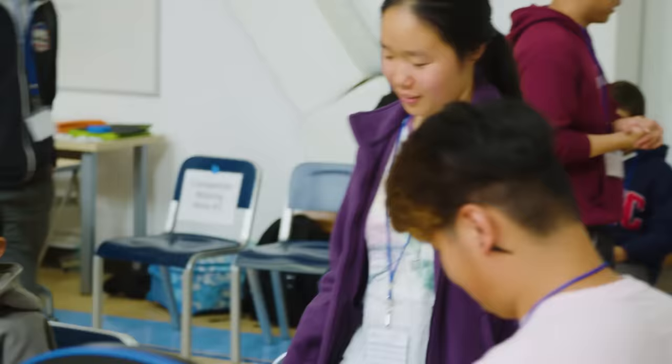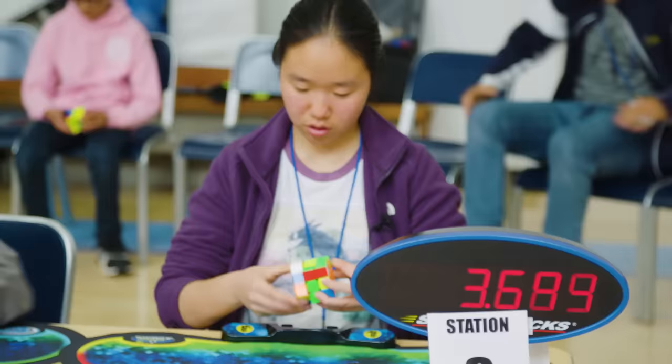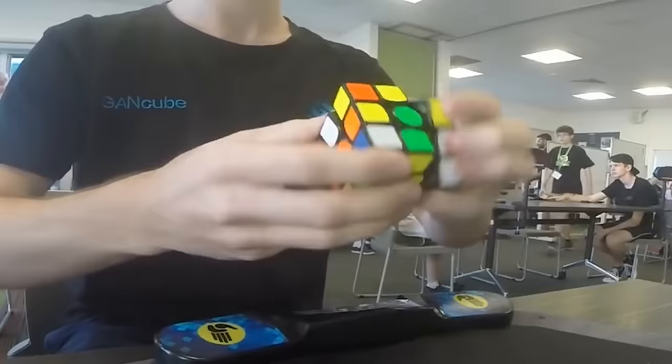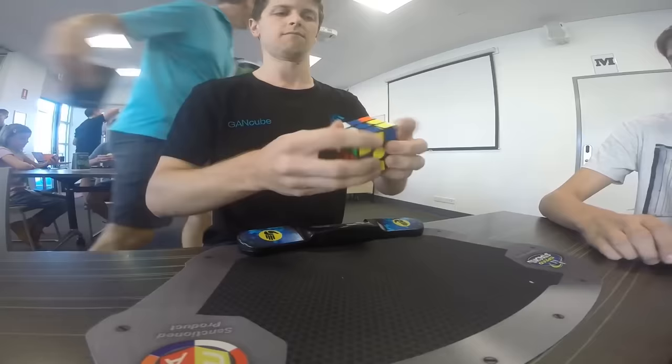Now is probably a good place to mention that diehard cubers actually care more about average times than single solves. The fact is, sometimes you just get a lucky scramble. A better test of a speedcuber's skill is to have them solve five cubes and average the three middle times.